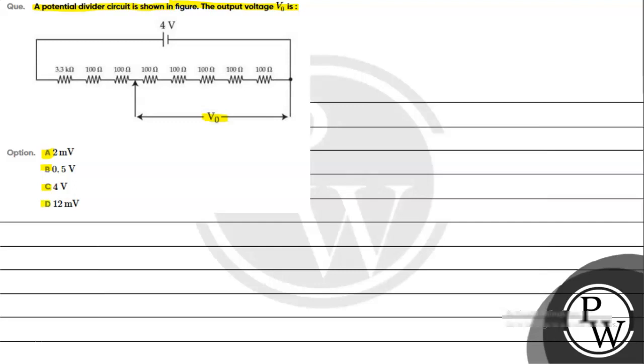Option C is 4V, option D is 12mV. For this question, the key concept we need to understand is the combination of resistances. We will use the combination of resistances here.